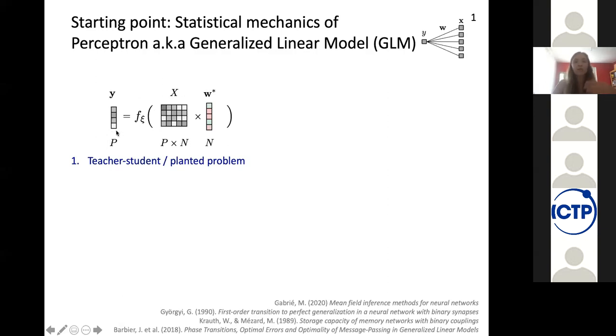And then we are going to ask whether a student perceptron model is able from the knowledge of X and Y, the training data, to recover the W star of the teacher. It's a minimum model of a learning problem where we know actually that there is a rule that generated the data and we are trying to learn it back. And it follows the tradition of physics to try to find some minimal modernization of the phenomenon that we are trying to study, and here learning.